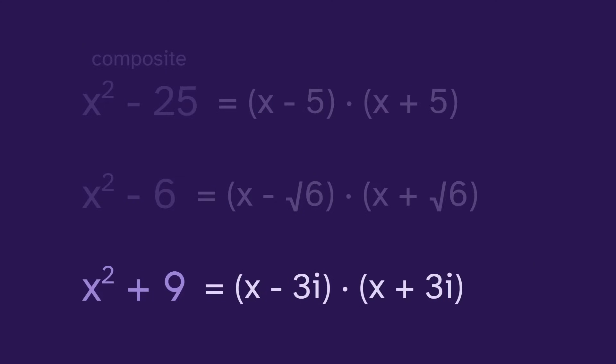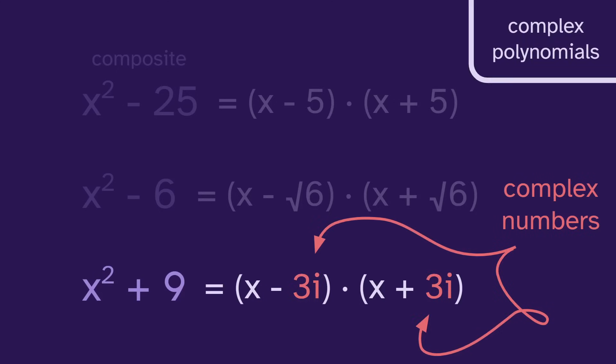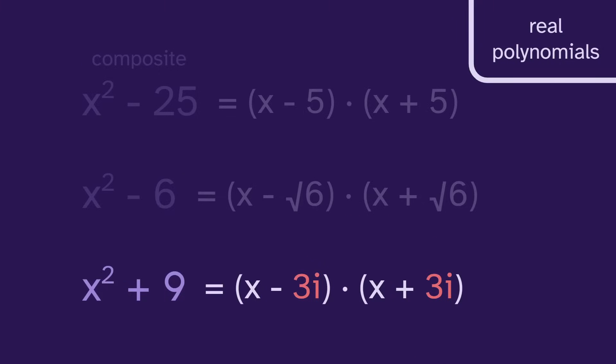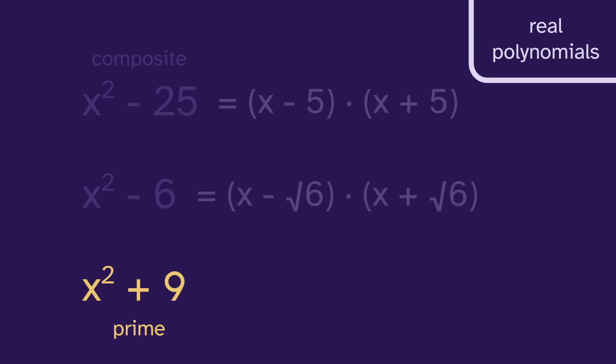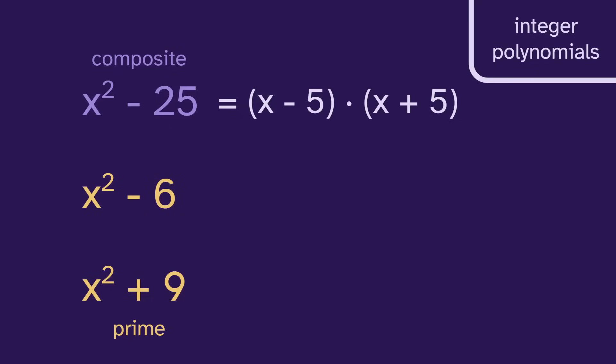However, this factorization requires complex numbers. So that's fine if we view these as complex polynomials, but if we work with them as real polynomials, then we can't make this factorization, meaning that this is prime in the real polynomials. So by switching the domain we're working in, we've switched the primes. And we can do this further: if we switch to the integer polynomials, then we can no longer make this factorization, since root six is not an integer. So that means that this is prime in the integer polynomials.